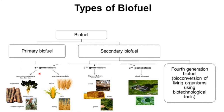Secondary biofuel is further divided into first, second, third, and fourth generation biofuel. First generation biofuels are derived from starch, sugar, animal fat, and vegetable oil. Second generation biofuels are derived from lignocellulosic biomass. Third generation biofuels are usually derived from algal biomass. Fourth generation biofuel involves bioconversion of living organisms using biotechnological tools — this is the present generation of biofuel that we are more focused on.